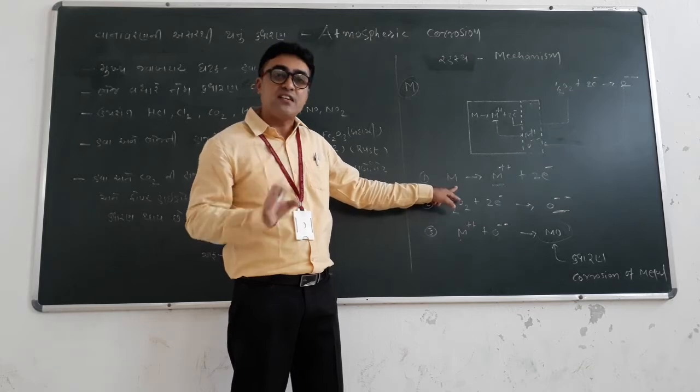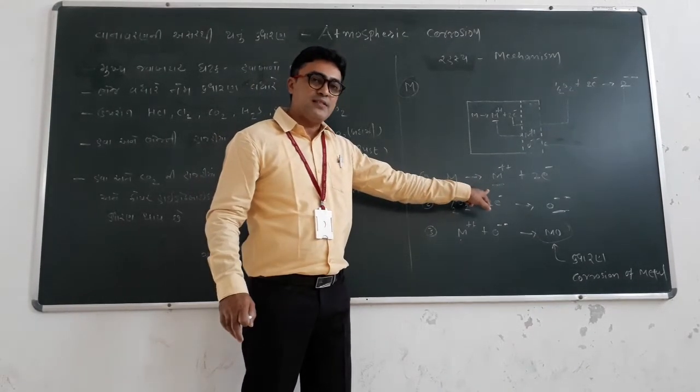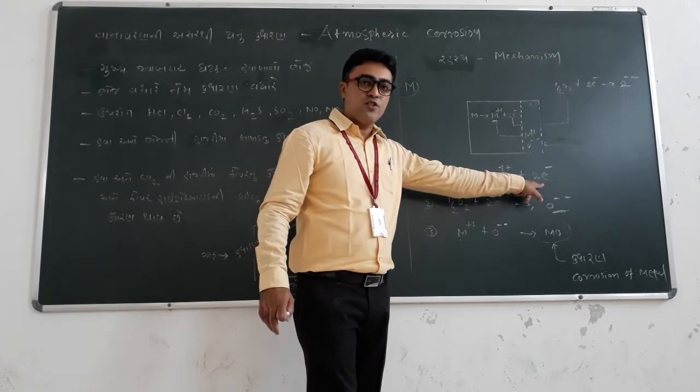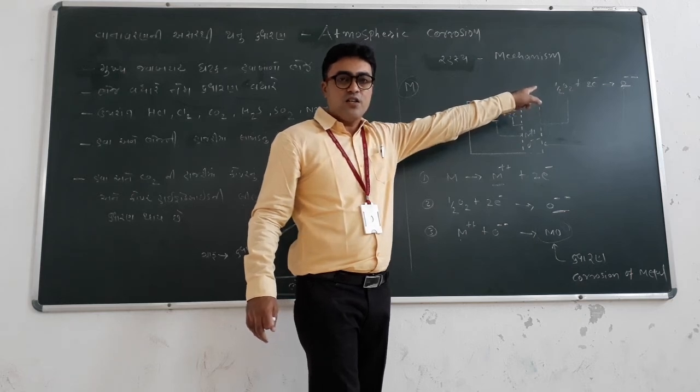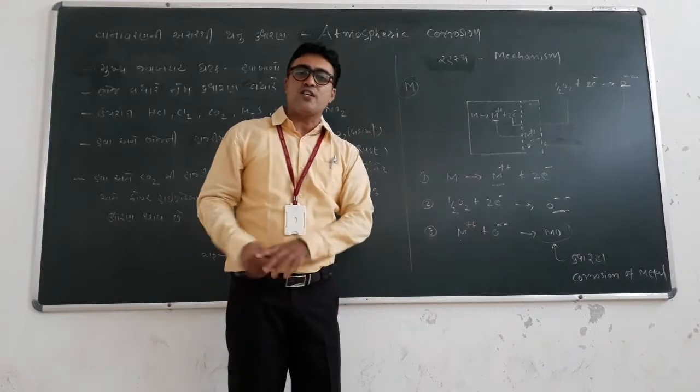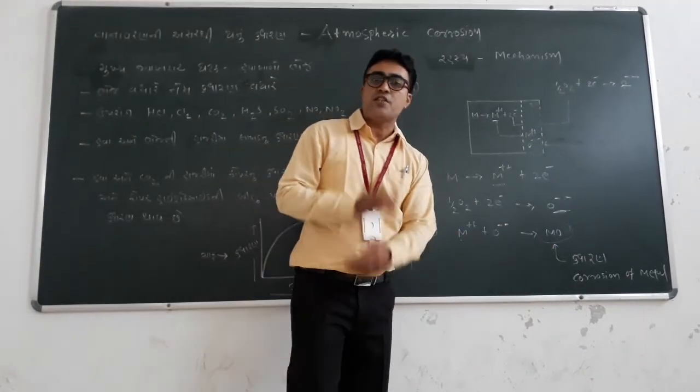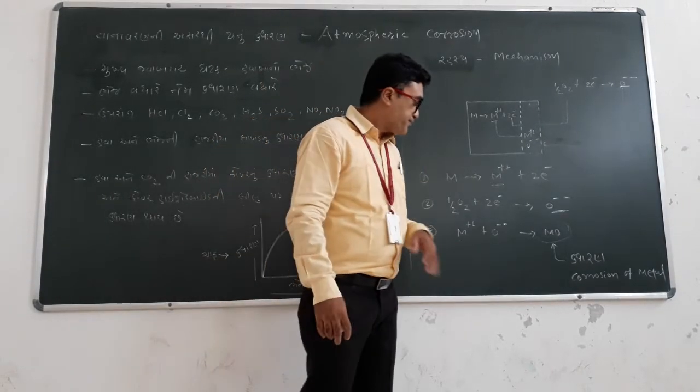M stands for any general metal. First of all, M is oxidized into M++, then releases electrons during the oxidation reaction. These react with oxygen in the open atmosphere and form O-2 ions. Then M+2 and O-2 get attracted and form MO. MO is nothing but the corrosion of metal, the metal oxide.